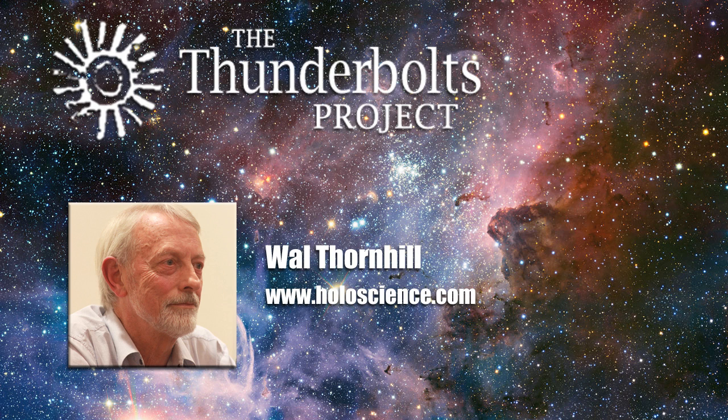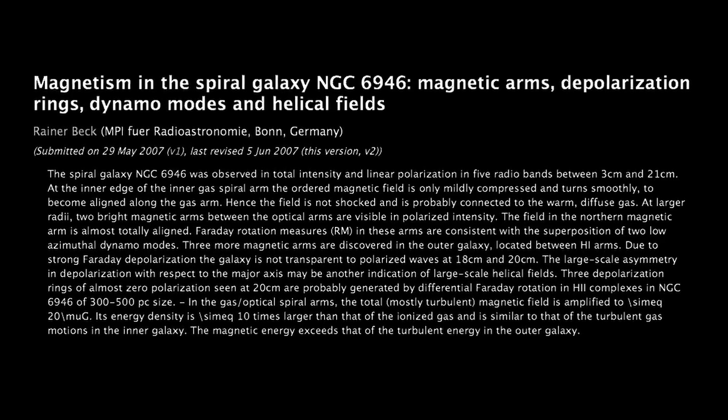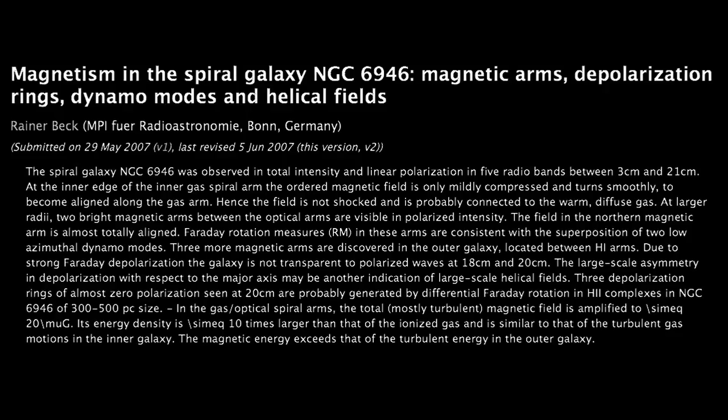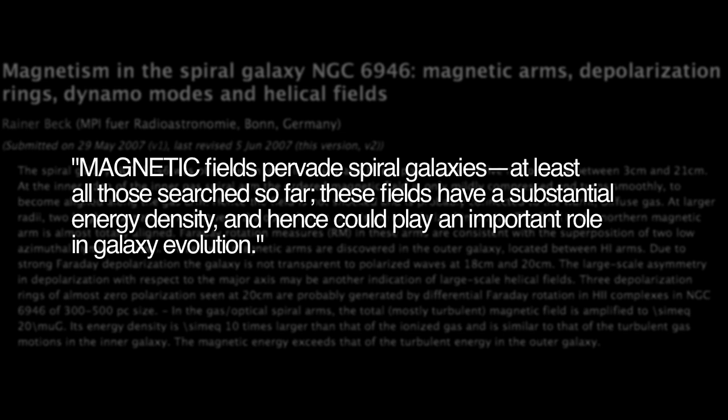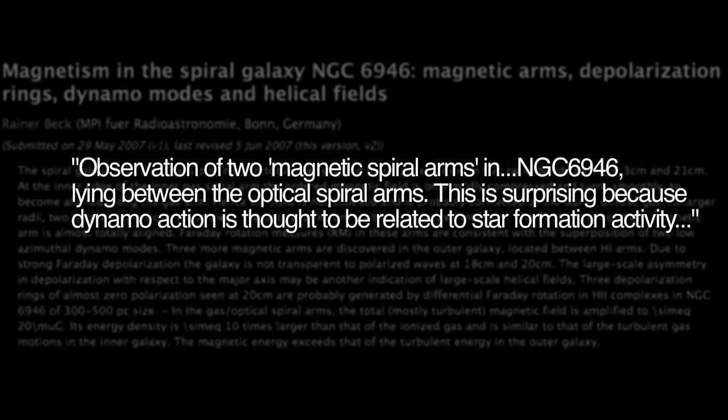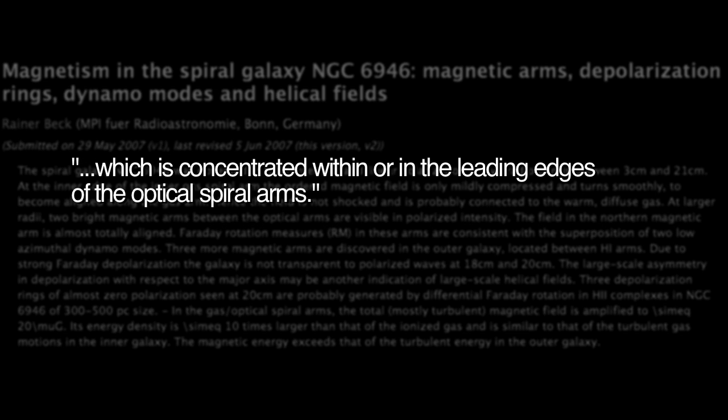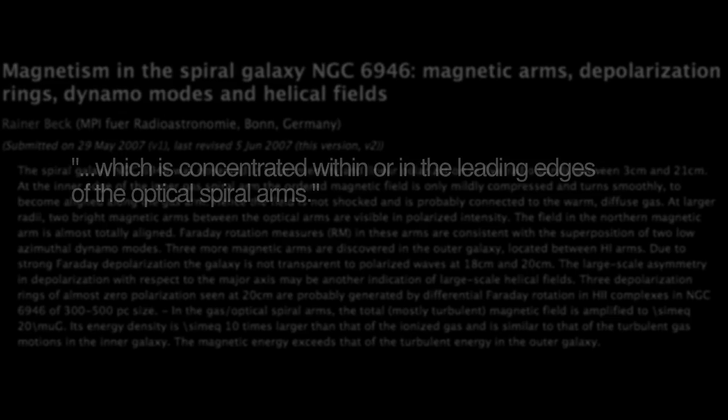So these extended halos around spiral galaxies are to be expected in the plasma cosmology view. In an earlier report of magnetic spiral arms in the galaxy NGC 6946, it was said magnetic fields pervade spiral galaxies, at least all of those searched so far. These fields have a substantial energy density and hence could play an important role in galaxy evolution. In this report, observation of two magnetic spiral arms in NGC 6946 lying between the optical spiral arms. But it's a surprise because dynamo action is thought to be related to star formation activity, and that's concentrated within or in the leading edges of the optical spiral arms. So here we have a problem.